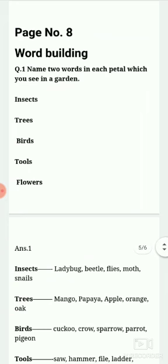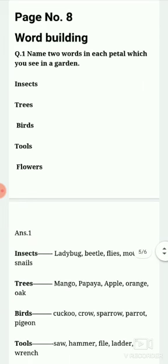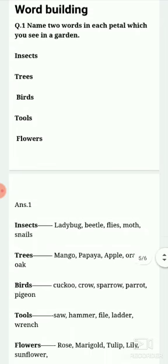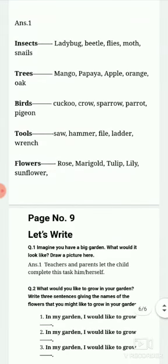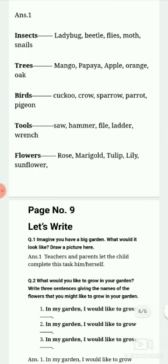Now, page number 8: you have to name two words in each petal which you see in a garden. In your book there will be a flower with petals. You have to mention two insects — for example: ladybug, beetle, flies. Two trees — for example: mango, papaya, apple. Two birds — for example: crow, sparrow, parrot, pigeon. Two tools — for example: saw, hammer, file, ladder, wrench. Two flowers — for example: rose, marigold, tulip. You have to write two in each category.